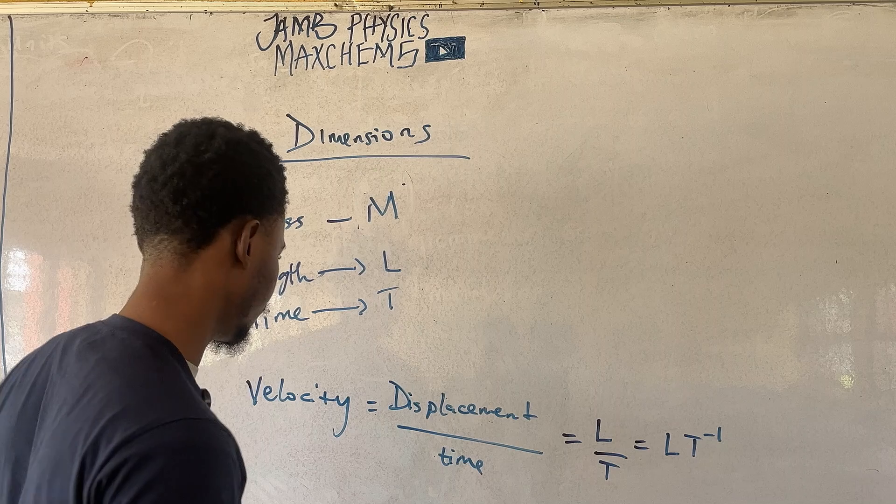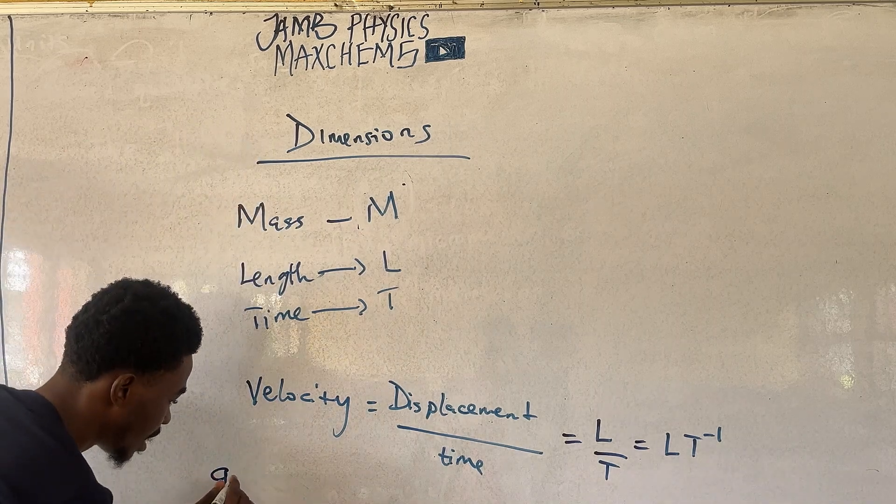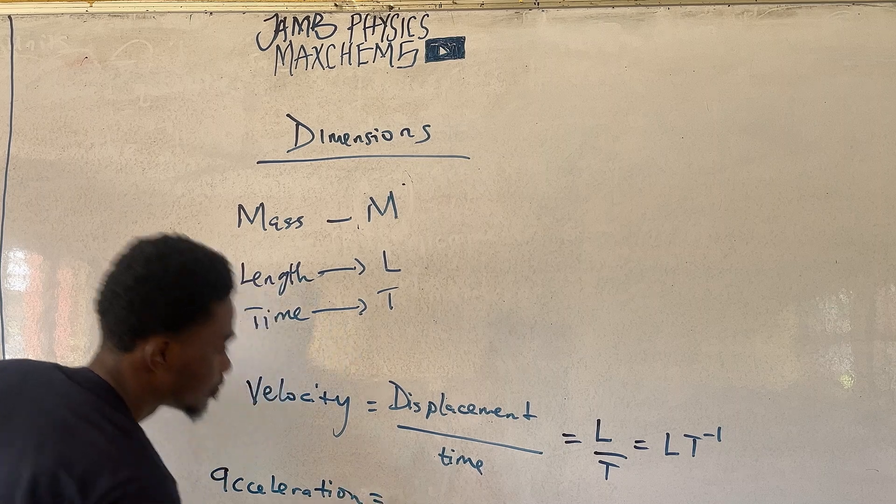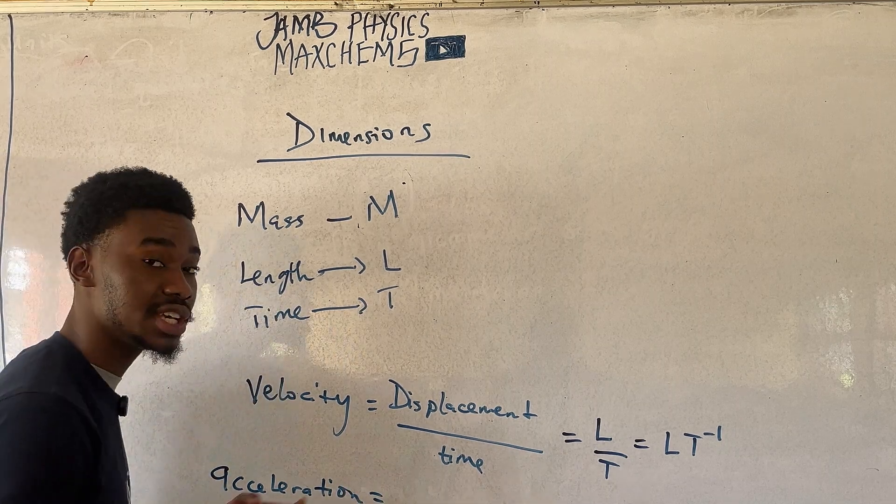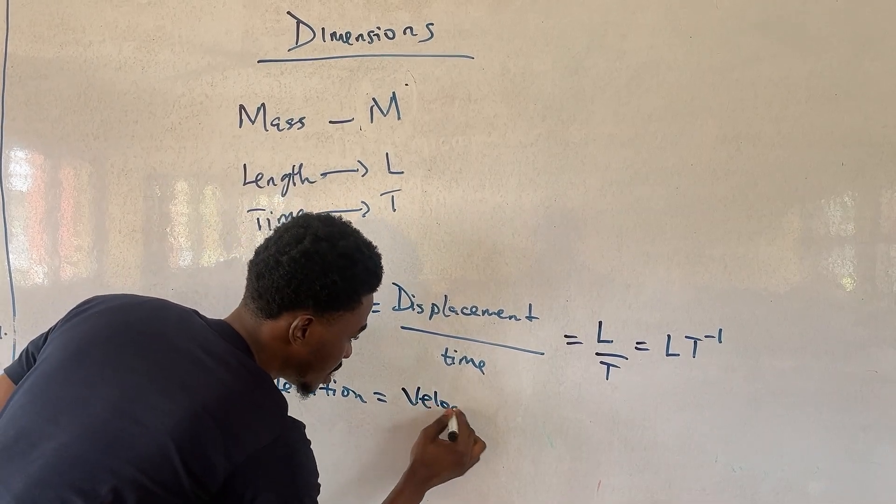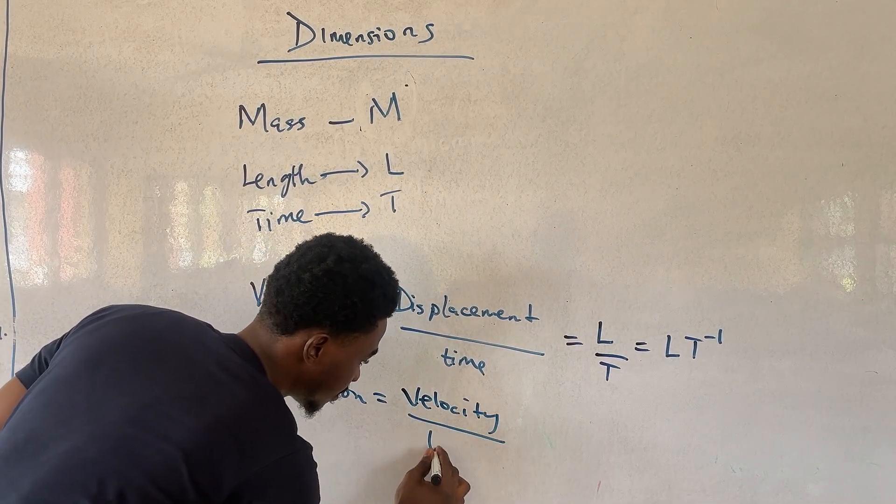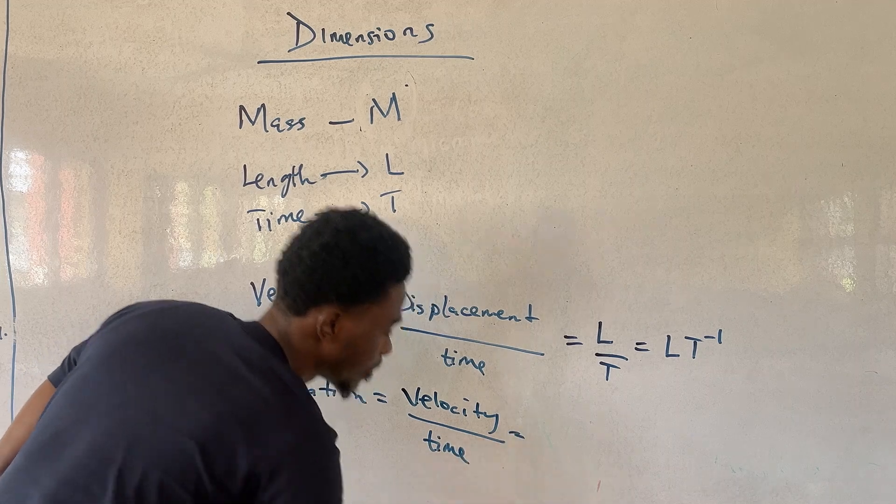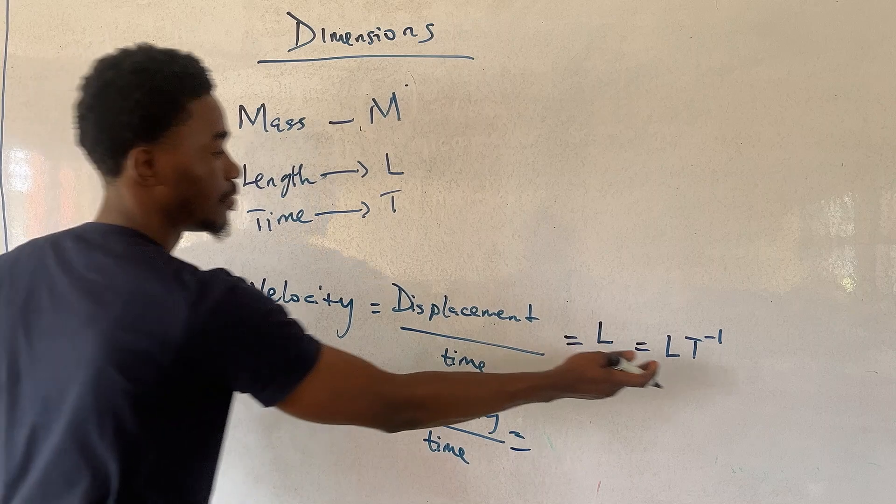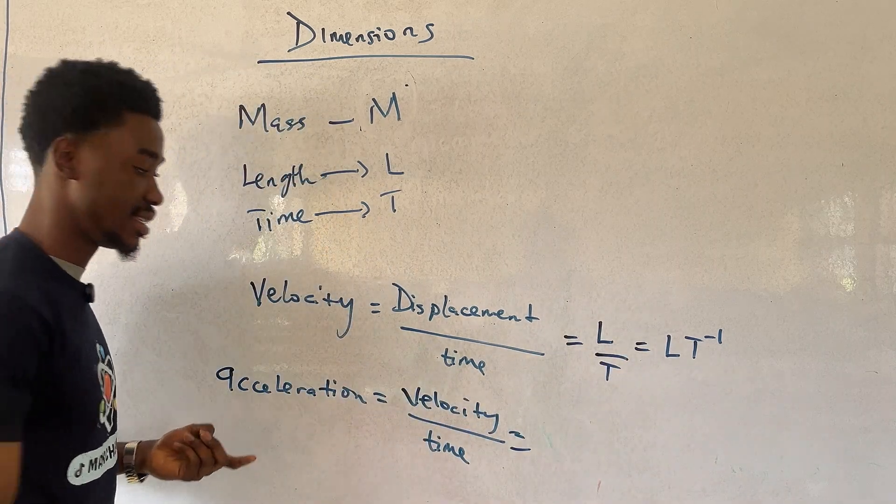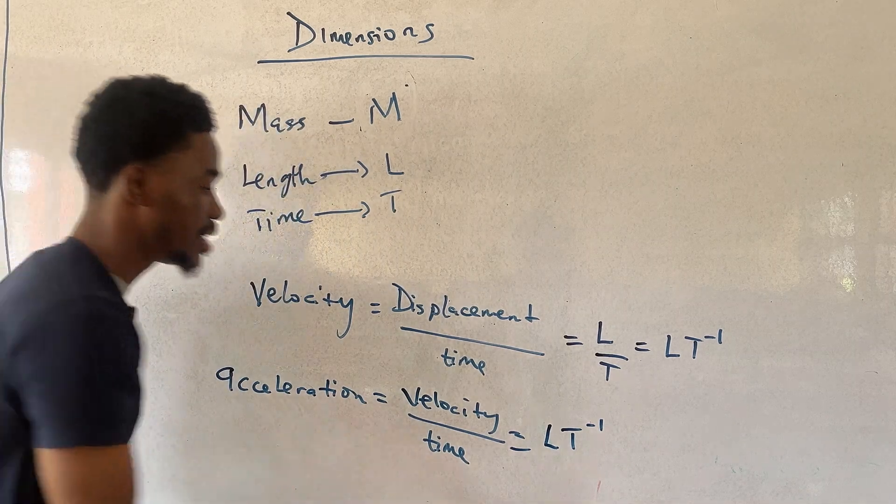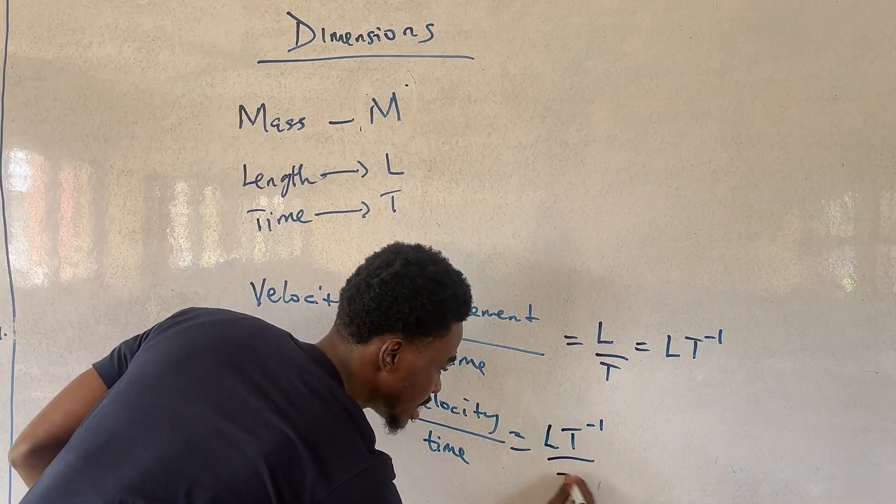Now, how about acceleration? Now, what is the formula for acceleration? Acceleration is the change, or the rate of change of velocity in time. So, it is velocity over time. And remember earlier, we already derived the dimension for velocity as LT to the power of minus one.